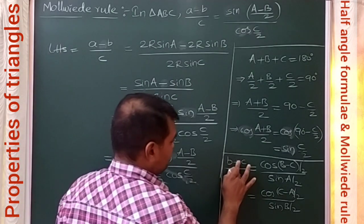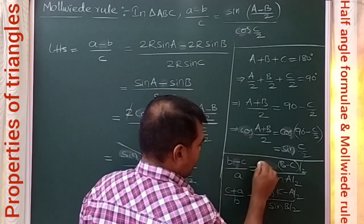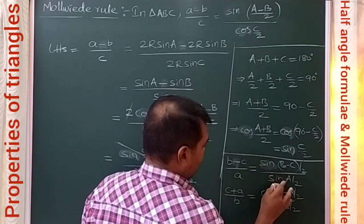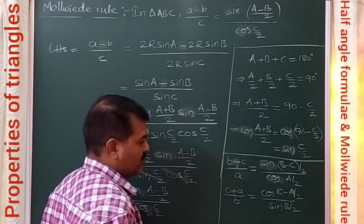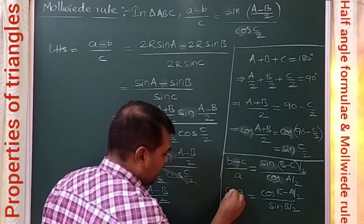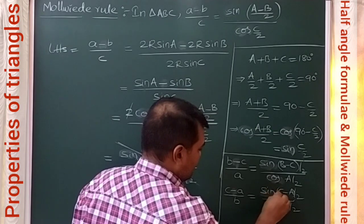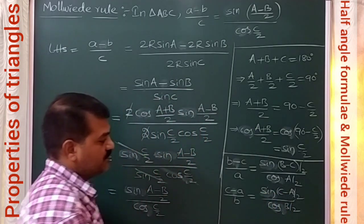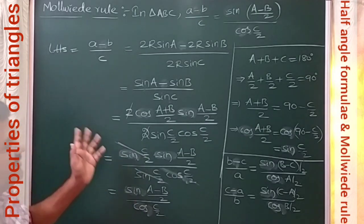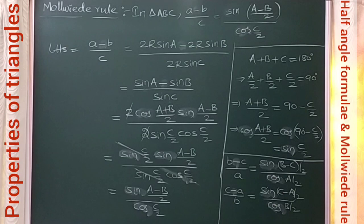So the result (a − b)/c = sin((A−B)/2) / cos(C/2) is proved. Similarly, (b − c)/a = sin((B−C)/2) / cos(A/2), and (c − a)/b = sin((C−A)/2) / cos(B/2). Similar proofs apply for these results as well.